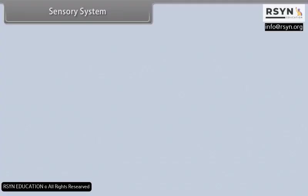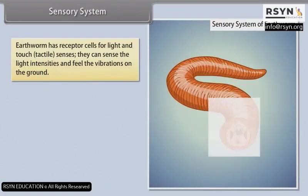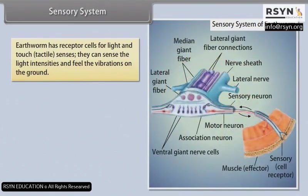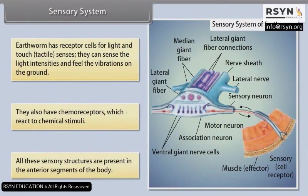Sensory System: Earthworm has receptor cells for light and touch (tactile senses). They can sense light intensities and feel vibrations on the ground. They also have chemoreceptors which react to chemical stimuli. All these sensory structures are present in the anterior segments of the body.